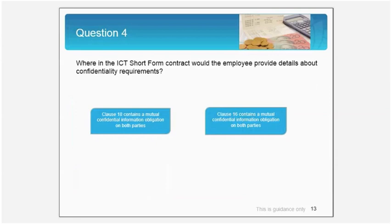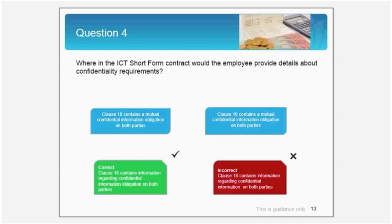Another question to consider is about employee details and confidentiality requirements. It's important to have these details included. Which clause contains this obligation — would it be clause 18 or clause 16? The correct answer is clause 18, which contains information regarding confidential obligations on both parties.